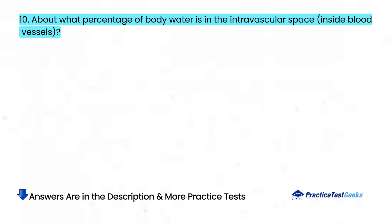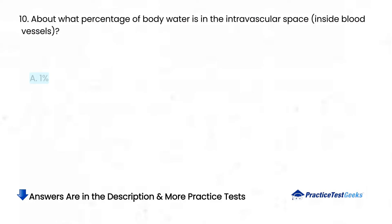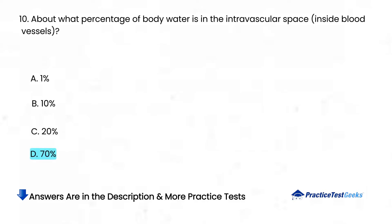About what percentage of body water is in the intravascular space, inside blood vessels? A. 1%. B. 10%. C. 20%. D. 70%.